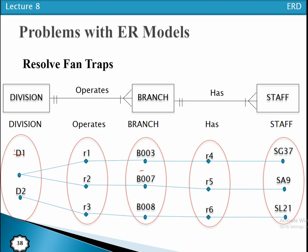Let's check whether this resolves the problem. Division D1 has branches B3 and B7. Branch B3 has staff ST37, B7 has SA9, and B8 has SL21. Now it is very clear that ST37 belongs to B03 and SA49 belongs to B007 — there is no ambiguity. By restructuring the relationship, we are able to resolve the fan trap problem.